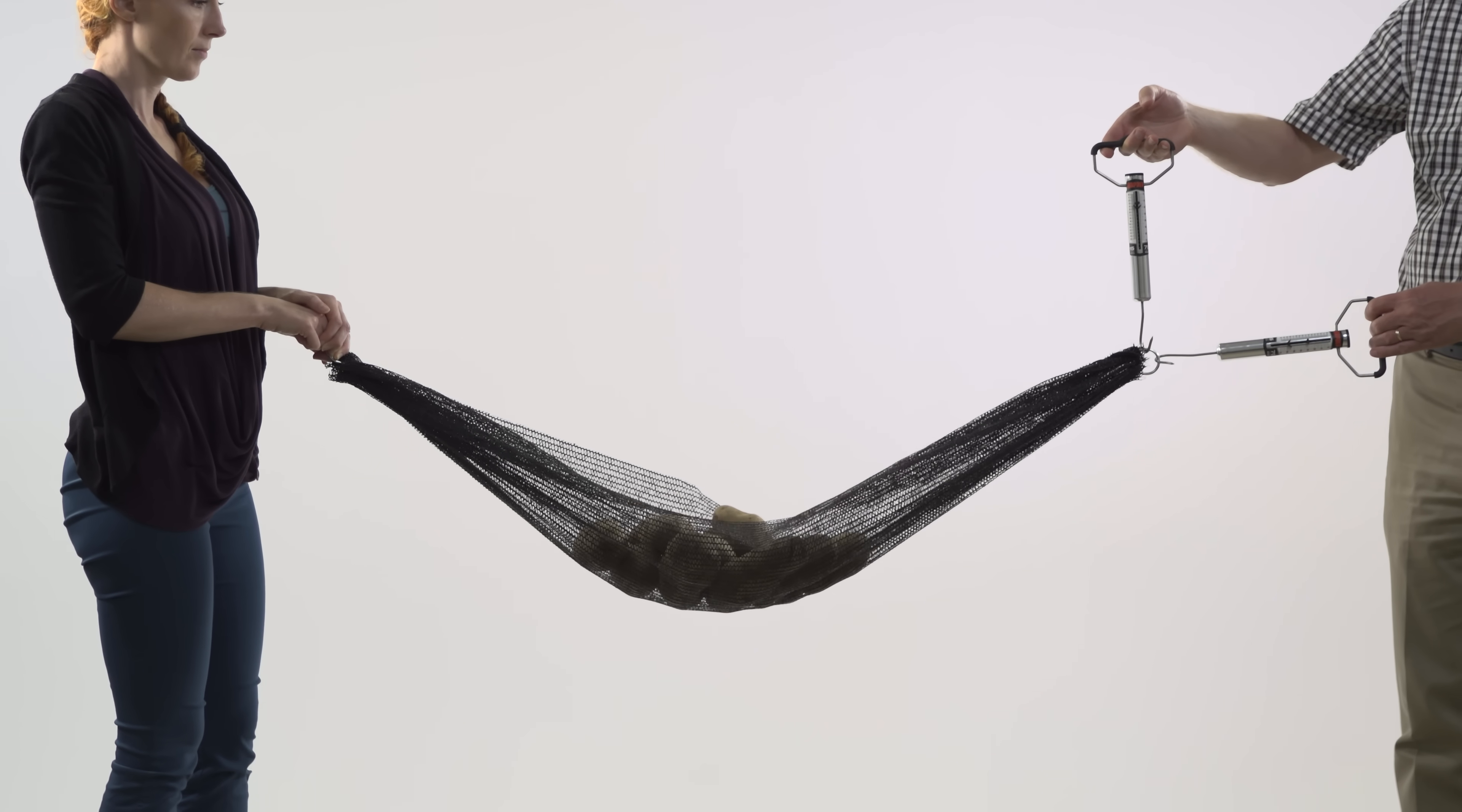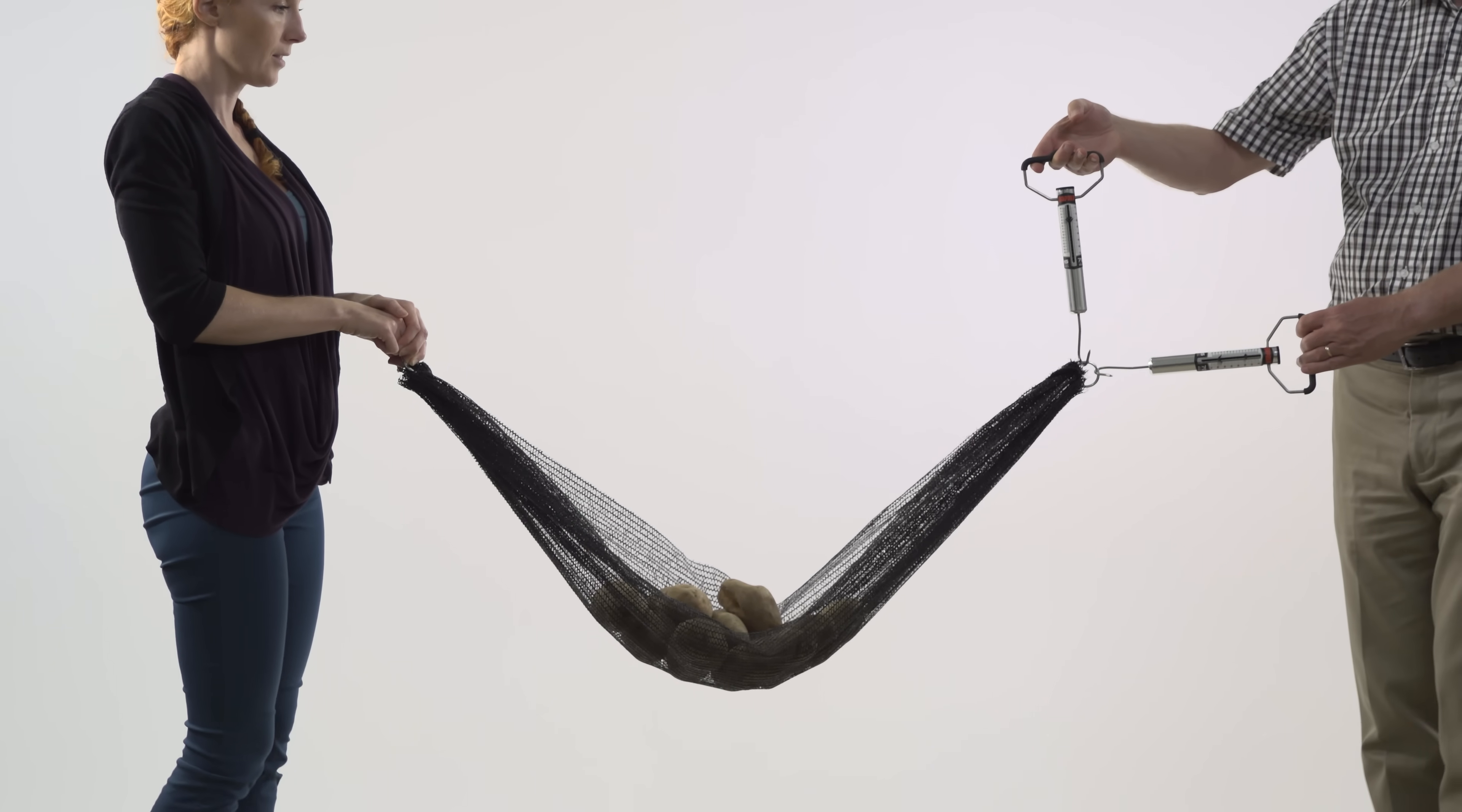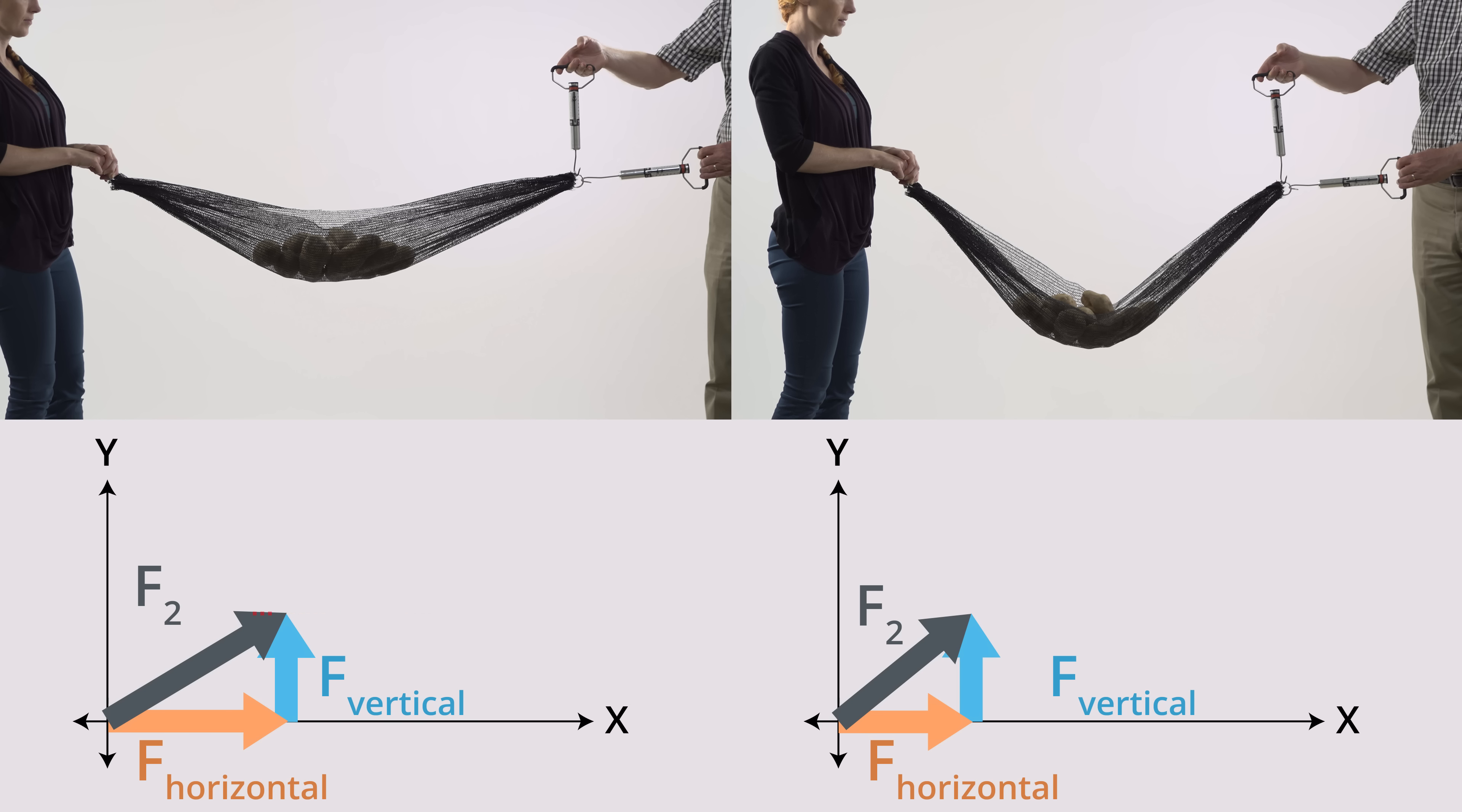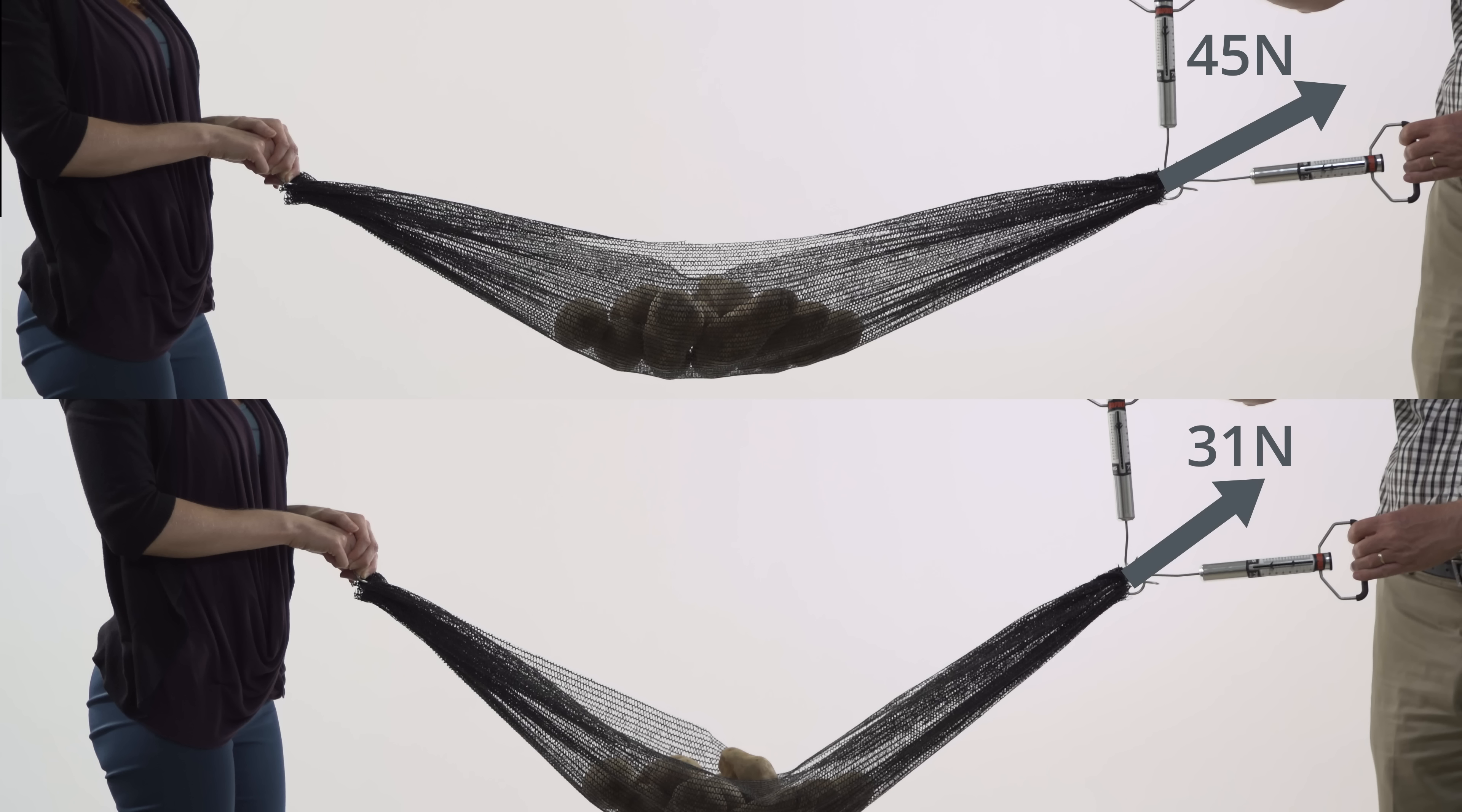As you can see from this experiment, when there is more sag, the vertical force does not change. It still equals half of the total hammock weight. However, the horizontal component decreases significantly. A graphical analysis would have told us the same thing. Notice that the forces in the rope also decrease significantly when there is more sag in the hammock.